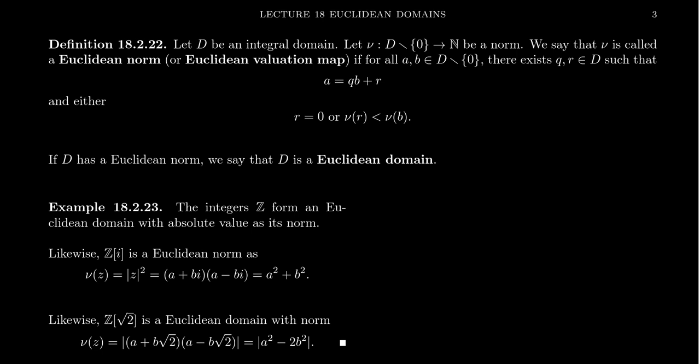And then define ν to be a norm, that is, it's a map from the non-zero elements of the domain to the natural numbers where zero is included in that. Remember, to be a norm, we have to have the property that the norm of x is less than or equal to the norm of xy, where y is any non-zero element inside of the domain as well.